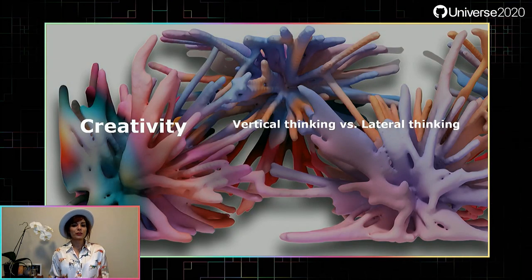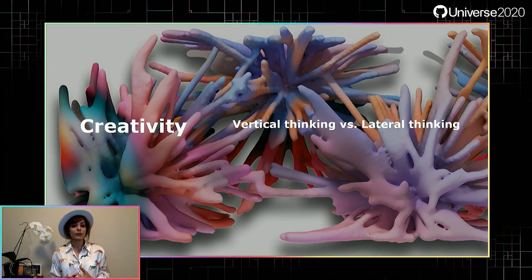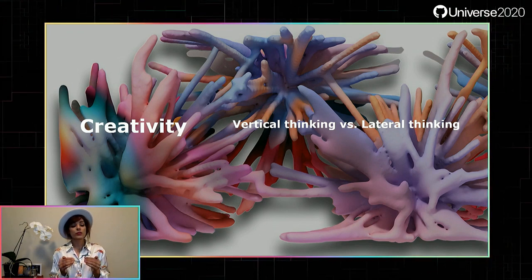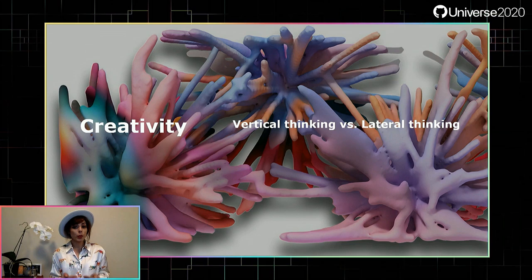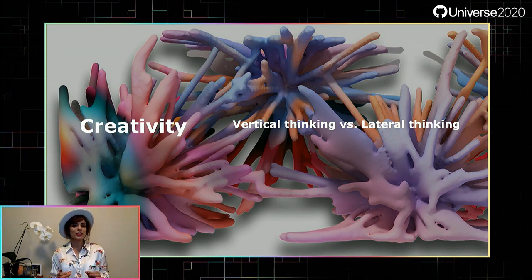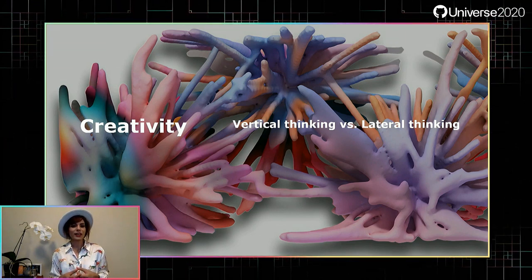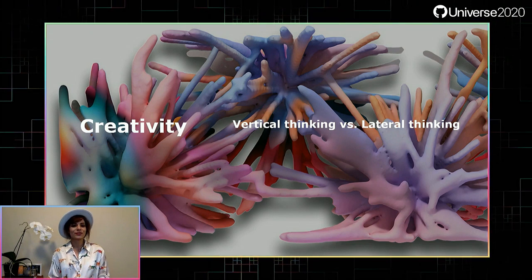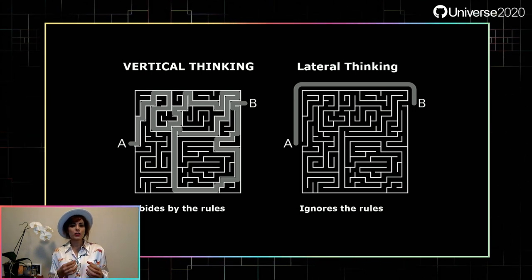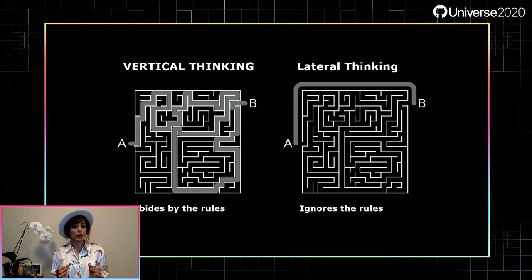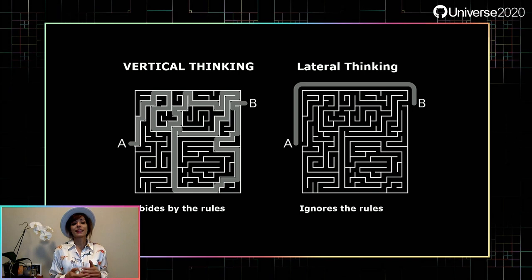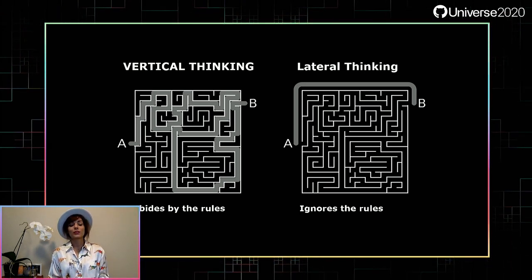What is the difference between vertical thinking and lateral thinking? Vertical thinking is linear, but creative thinking — or lateral thinking — is a concept first presented by Edward de Bono, the father of creativity. Lateral thinking is the ability to use your imagination to look at a problem in a fresh way and come up with a new solution. Vertical thinking follows the rules, while lateral thinking ignores the rules to find the solution.